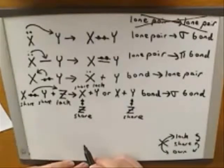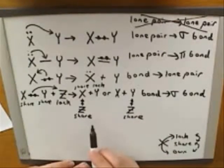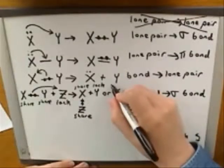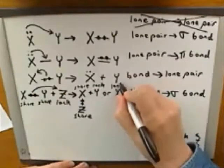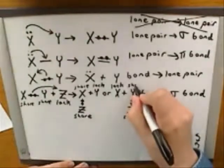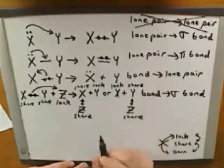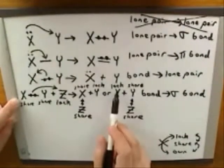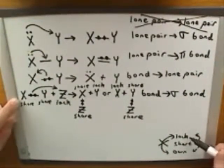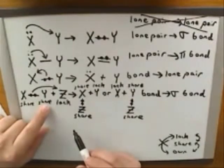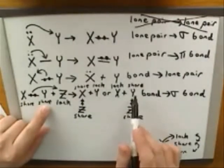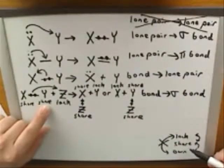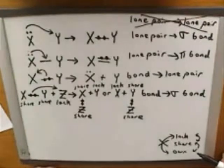By the same token, the other set of products would also have been legal. In that case, it's X that now lacks the electrons and Y that is sharing them. X has gone from sharing in the starting materials to lacking in the product — sharing to lacking is one step. And Y has gone from sharing in the starting materials to continuing to share in the product — that's no step at all. So all of these transitions are allowable.